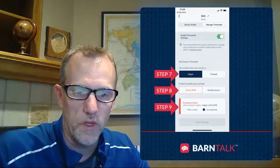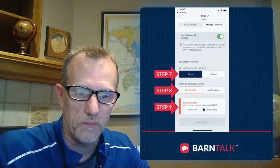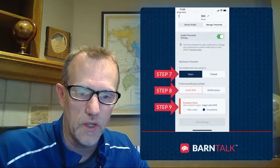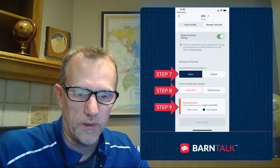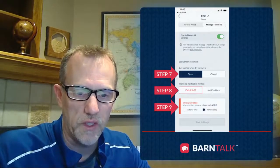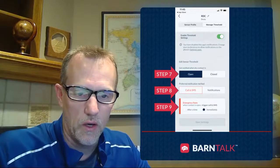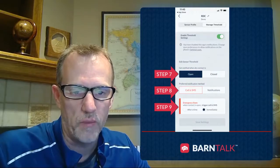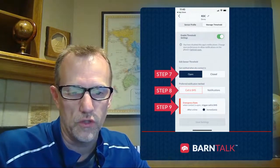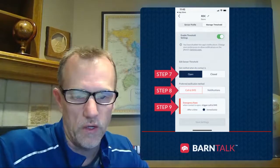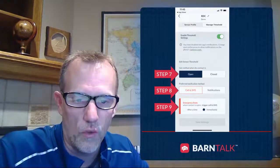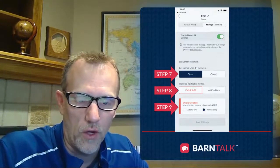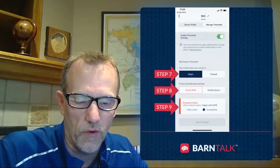Finally, you want to select when to be notified. Because we have call and SMS selected, this indicates an emergency type of alarm, so you would typically select immediately. Or you can select after a time — you can put in how many minutes after the state change you want it to call you. This could be helpful in an auger runtime application where you might want to be notified that an auger has run longer than 60 minutes, for example.